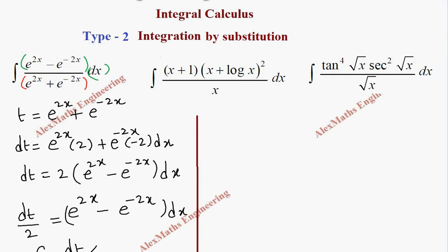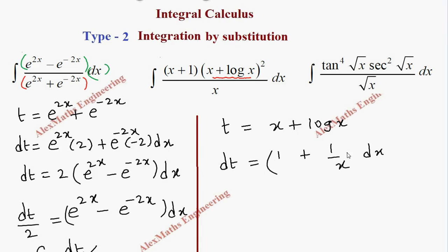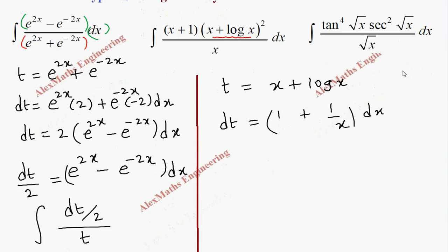In the second problem I'm going to take the entire inner function as t. Let t equal to x plus log x. We have to find dt: differentiation of x is 1, differentiation of log x is 1/x, then we have dx. Taking LCM, we get dt equal to (x + 1/x) dx.